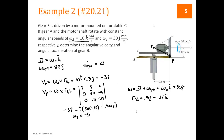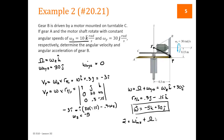We can now write the full omega vector: negative 5 K hat plus 30 J hat. For alpha, using our expression, alpha equals omega_xyz dot plus capital omega crossed with omega_xyz. Since omega_xyz dot is zero, this is negative 5 K hat crossed with 30 J hat. Negative K crossed into positive J is positive I, and 5 times 30 gives 150 I hat. That is the answer for alpha.